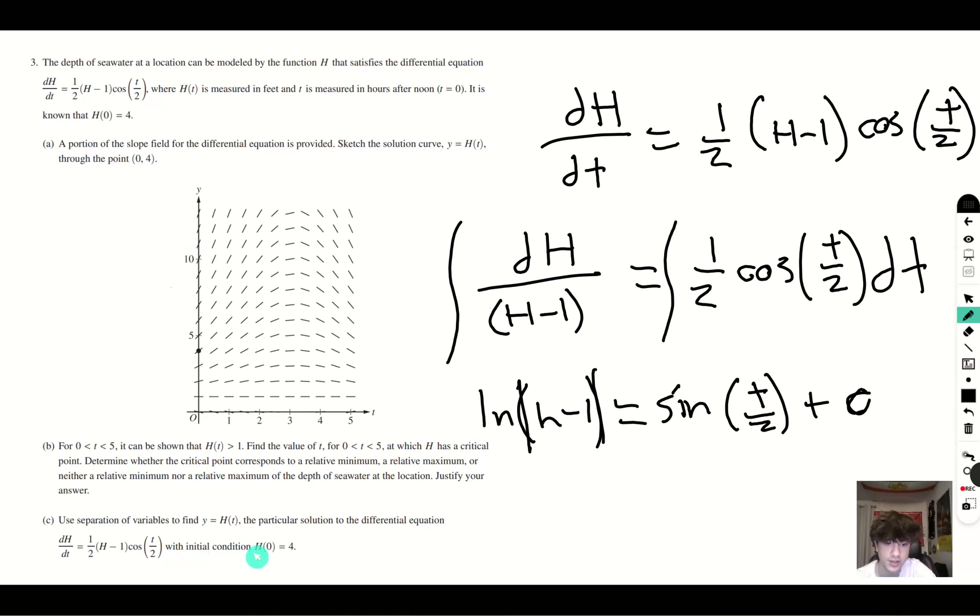And we use the initial condition, when t is zero h is four. So sine of zero over two sine of zero is going to be zero. And h is going to be four. So we get natural log of three is equal to zero plus c. So natural log of three is c. So then we get natural log of h minus one is equal to sine t over two plus natural log of three. So there you go. There is your particular solution.